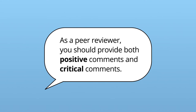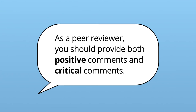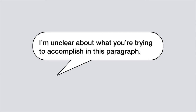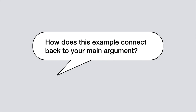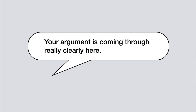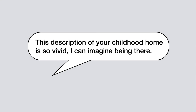As a peer reviewer, you should provide both positive comments and critical comments. Critical comments highlight areas for improvement or ask clarifying questions — for example, "I'm unclear about what you're trying to accomplish in this paragraph," or "How does this example connect back to your main argument?" Positive comments, on the other hand, highlight strengths and offer reinforcement for what's working well — for example, "Your argument is coming through really clearly here."